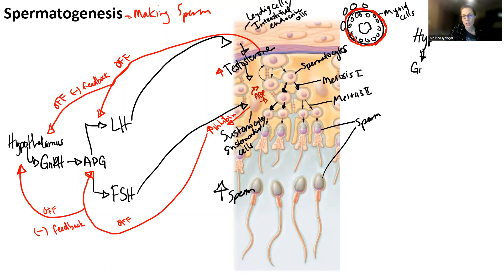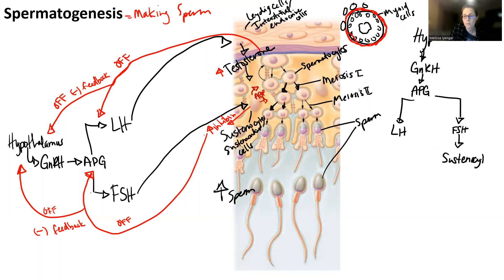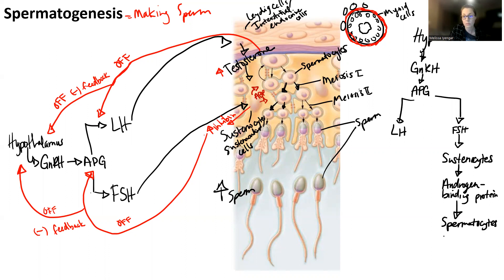Let me do a cleaner flow chart. Hypothalamus creates GnRH. GnRH targets the anterior pituitary gland. Anterior pituitary gland makes LH and FSH. FSH targets our sustentacular cells. The sustentacular cells make androgen binding protein, which targets the spermatocytes to bind testosterone.